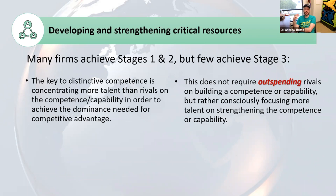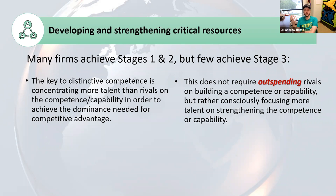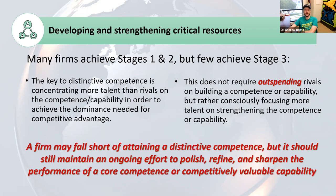A lot of firms achieve those first two stages, but moving it to a distinctive competency and turning it into a competitive advantage is a much harder step. The key to that distinctive competence is that we have to concentrate more and more of our talent — more so than our rivals do — in order to become dominant and be known as the best at it. This doesn't mean we have to outspend them, but we have to consciously focus more talent and more effort on strengthening those competencies or capabilities. Our firms fall short a lot of the time, but we should always work tirelessly on maintaining an ongoing effort to do all these things.